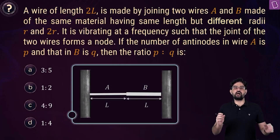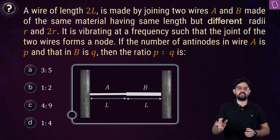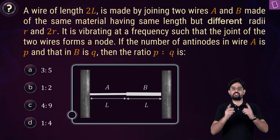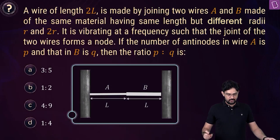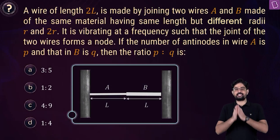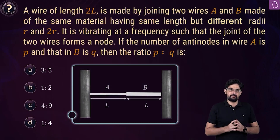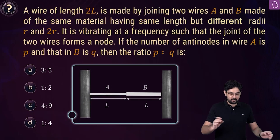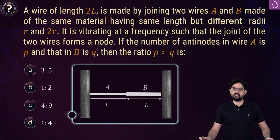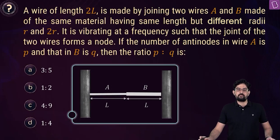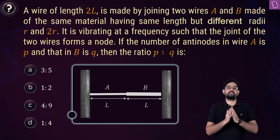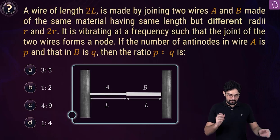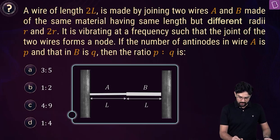In this case, there are two wires A and B that are joined together. Both wires A and B have the same length L, they are made up of the same material, but the radius of wire A is R and the radius of wire B is 2R.